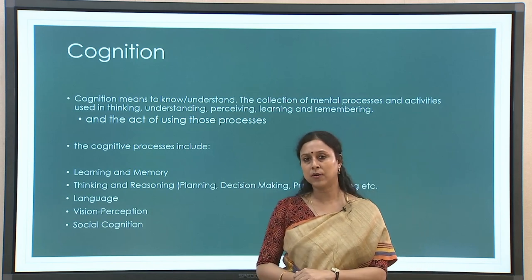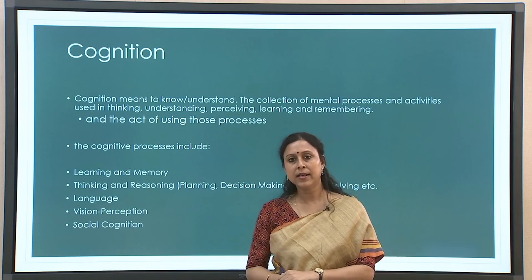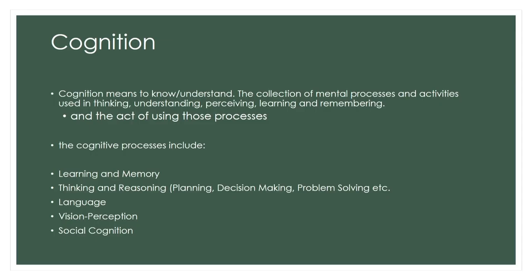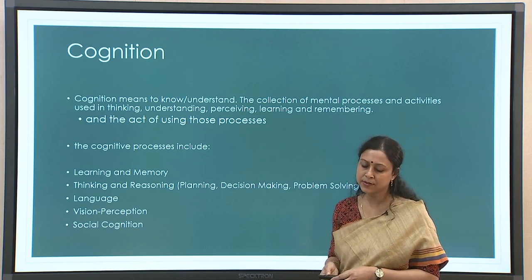Before we move ahead into bilingual cognition we need to know what cognition itself is. Cognition primarily means to know, to understand. It is a collection of mental processes and activities used in thinking, understanding, perceiving, learning, and remembering. These are the textbook definitions of cognition. Knowing and understanding has many layers including thinking, perceiving, memorizing, learning, and remembering. For the benefit of this course I have added a few relevant ones: learning and memory, thinking and reasoning, language, vision perception, and social cognition.